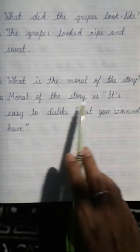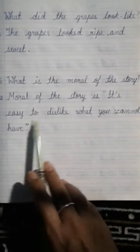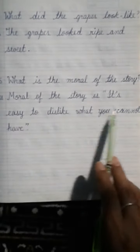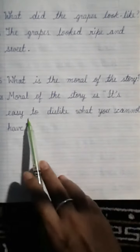Question number 5. What is the moral of the story? Answer. Moral of the story is, It's easy to dislike what you cannot have. So you will learn this question answer and send recording to the teacher.